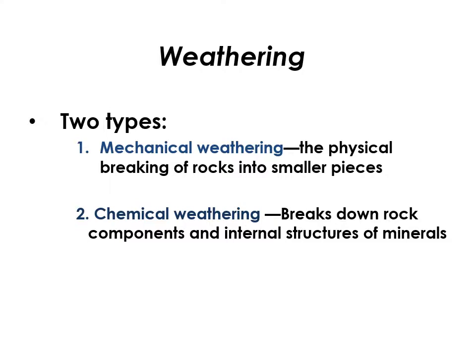When we talk about weathering, we're talking about breaking rock into smaller stuff. There are two main ways we do this. Number one is mechanical weathering, which is just physically breaking rocks into smaller pieces — smashing them up with some process into smaller stuff. We also have chemical weathering, which is breaking down rock chemically into different kinds of minerals, usually by dissolving minerals in water.